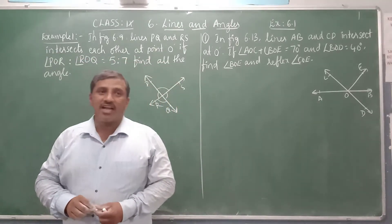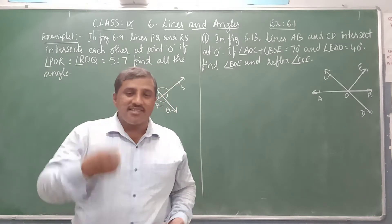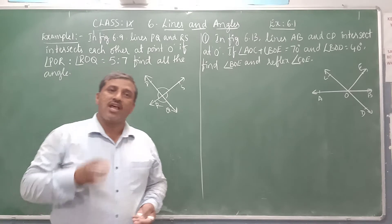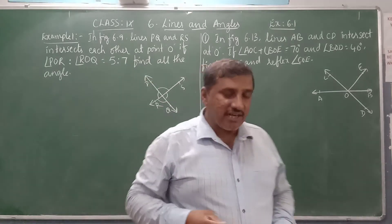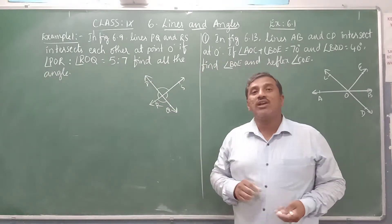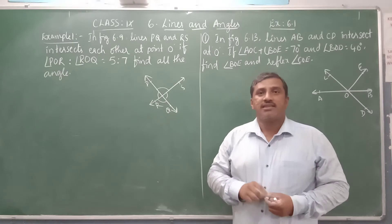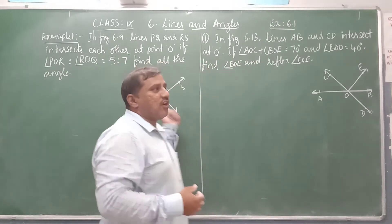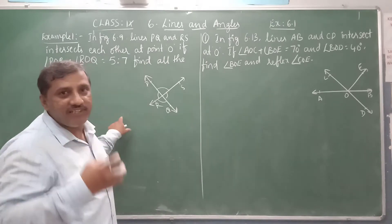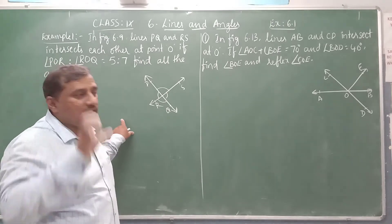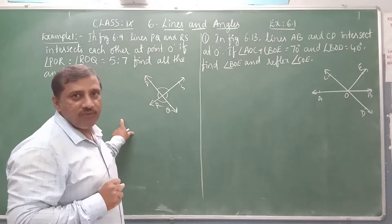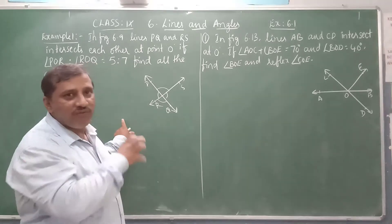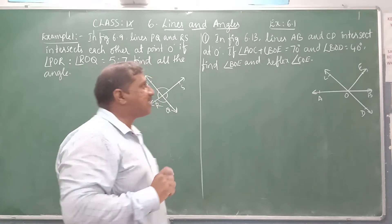Namaste children and welcome to today's class. In the last class we discussed the introduction of lines and angles. Now we are discussing Theorem 6.1, that is, if two lines intersect each other, the vertical angles formed are equal. In this class we are going to discuss the application of Theorem 6.1 in solving questions — how we apply the theorem and find the required values.